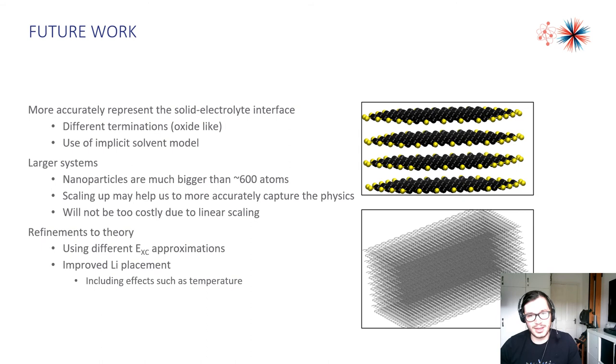Moving forward we want to look at different ways to improve our model. We want to look at different terminations instead of hydrogen. We also want to maybe look at the use of an implicit solvent model. This will help us more accurately represent the solid electrolyte interface that occurs in batteries.